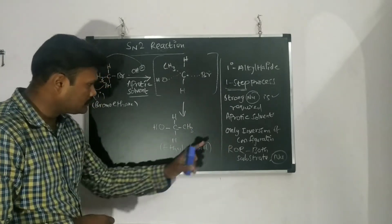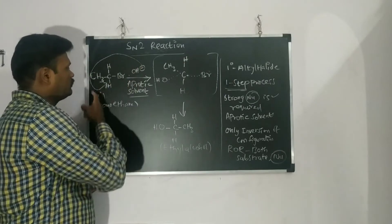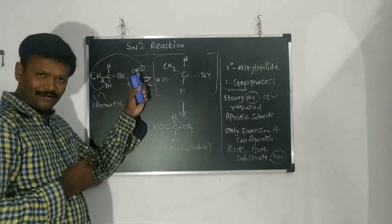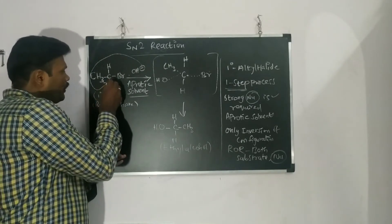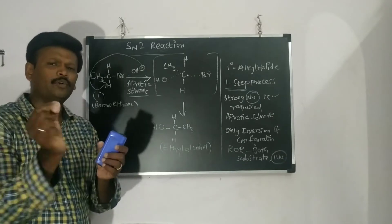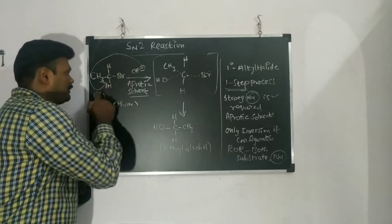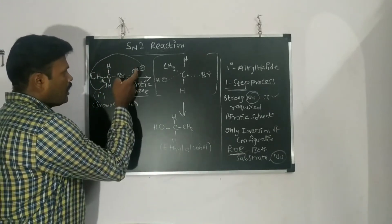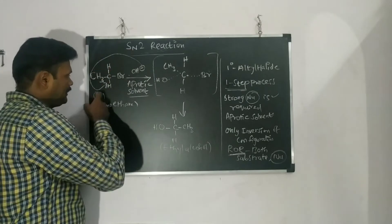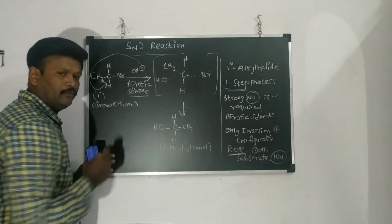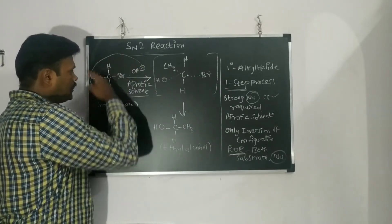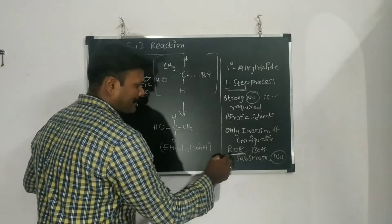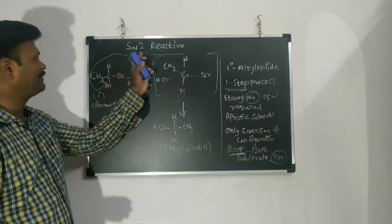Why does OH⁻ attack from the back side? Because there is no steric hindrance in a 1° alkyl halide — the hydrogen atoms are very small compared to CH₃, so the nucleophile can attack directly from the back side and remove the Br⁻. The rate of reaction depends on both the nucleophile and the substrate: how strong the nucleophile is determines how effectively it attacks, and accordingly how fast the Br⁻ leaves. That is why it is called an SN2 reaction — rate depends on both substrate and nucleophile.